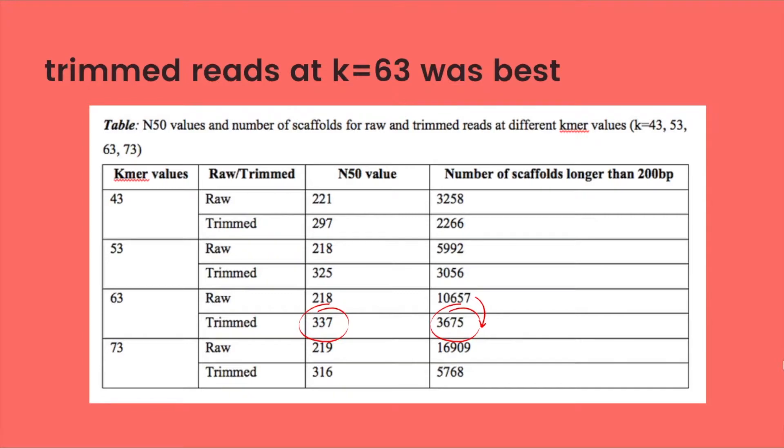Consequently, I found that the trimmed reads at k equals 63 was the best use for genome assembly because the N50 score was the highest compared to other k-mer values and the number of scaffolds longer than 200 bp was lower than its raw reads.